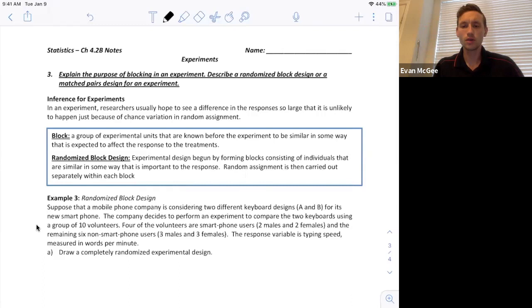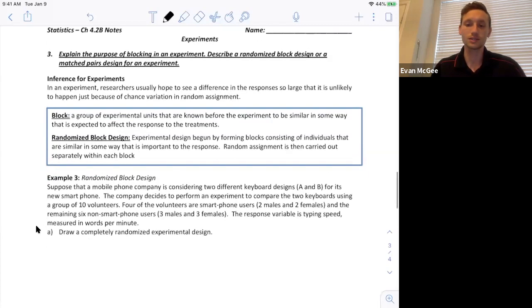Suppose a mobile phone company is considering two different keyboard designs, A and B, for its new smartphone. The company decides to perform an experiment to compare the two keyboards using a group of 10 volunteers. Four of the volunteers are smartphone users, two males and two females, and the remaining six are non-smartphone users, three males and three females. The response variable is typing speed and they're measuring words per minute.